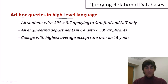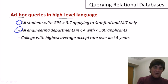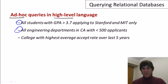So let's look at an example of a few queries. Let's go again to our imaginary database of students who are applying to colleges. And here's just three examples of the types of things that you might ask of a relational database. You might want to get all students whose GPA is greater than 3.7 who are applying to Stanford and MIT only. You might want to get all engineering departments in California with fewer than 500 applicants. Or you might ask for the college with the highest average accept rate over the last five years.